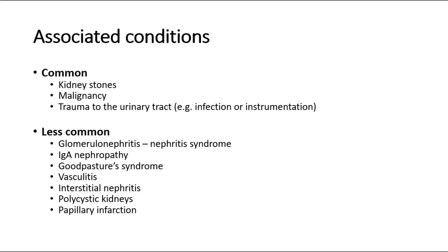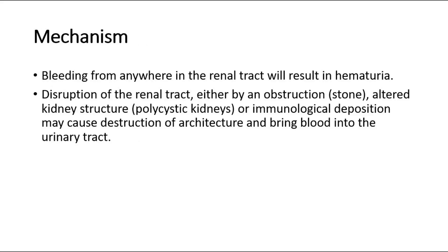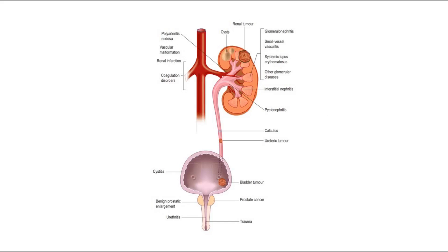For its mechanism, bleeding from anywhere in the renal tract will result in hematuria. Disruption of the renal tract, either by an obstruction due to stone, altered kidney structure in polycystic kidneys, or immunological deposition, may cause destruction of architecture and bring blood into the urinary tract, causing hematuria.